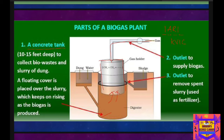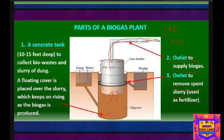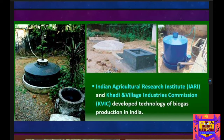The spent slurry is removed through another outlet and can be utilized as a fertilizer. There is one outlet to supply the biogas and another outlet to remove the spent slurry, which can be used as a very good fertilizer. So when using a biogas plant, we can make our own fuel and also produce a good fertilizer for the farm. The biogas can be utilized for cooking, lighting, and other purposes. The Indian Agricultural Research Institute and Khadi and Village Industries Commission developed this technology widely used across India.